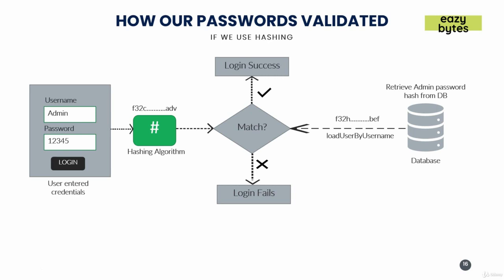If they match, the login will succeed; otherwise the login will fail. But you may ask: how does Spring Security know what hashing mechanism to use? What kind of hashing does Spring Security follow, and where does this matching and conversion happen based upon the value received from the UI or from Postman? For all such questions, PasswordEncoder is the answer.